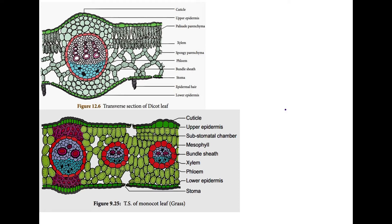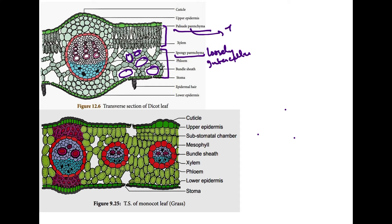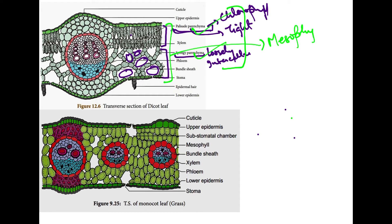The palisade parenchyma consists of densely packed elongated cells with high chlorophyll. The spongy parenchyma cells are loosely packed with many intercellular spaces. Because palisade parenchyma is tightly packed, there are fewer intercellular spaces there, so more photosynthesis occurs in palisade parenchyma since chlorophyll gets more light. Together, palisade parenchyma and spongy parenchyma form the mesophyll.